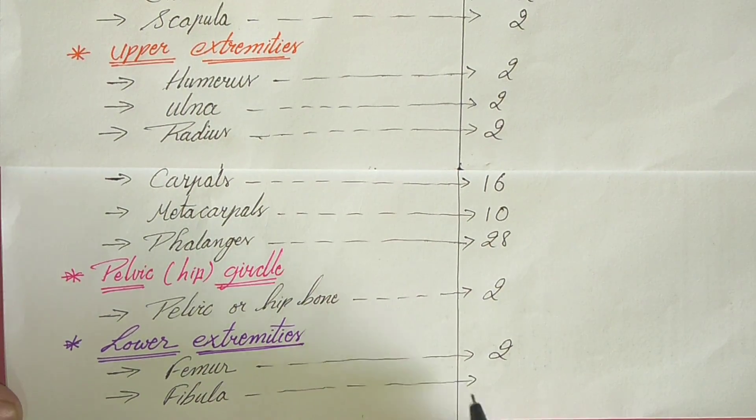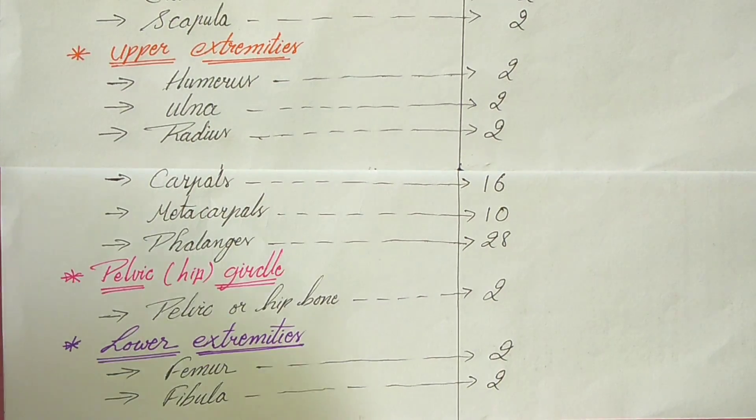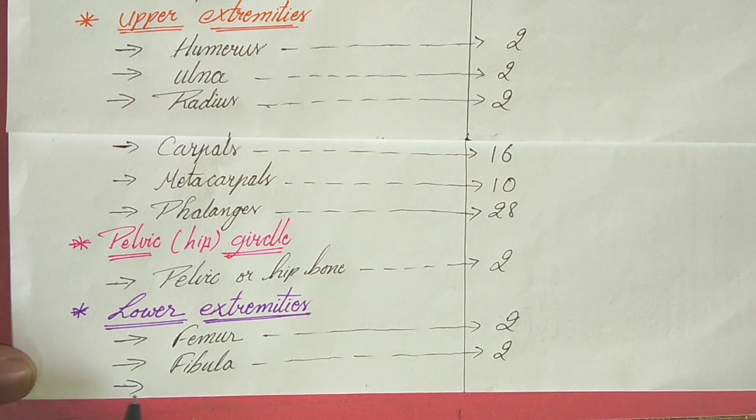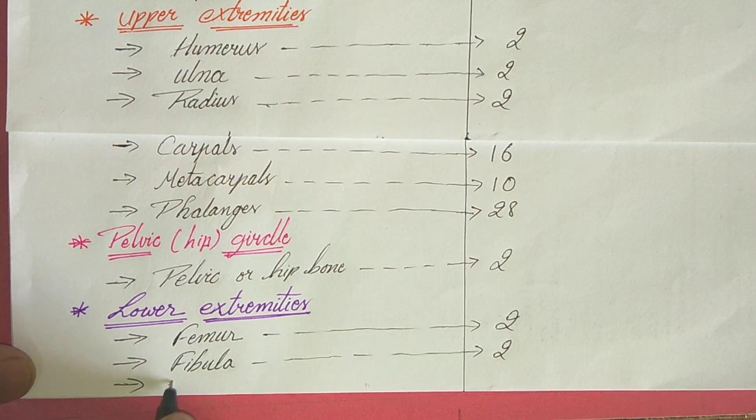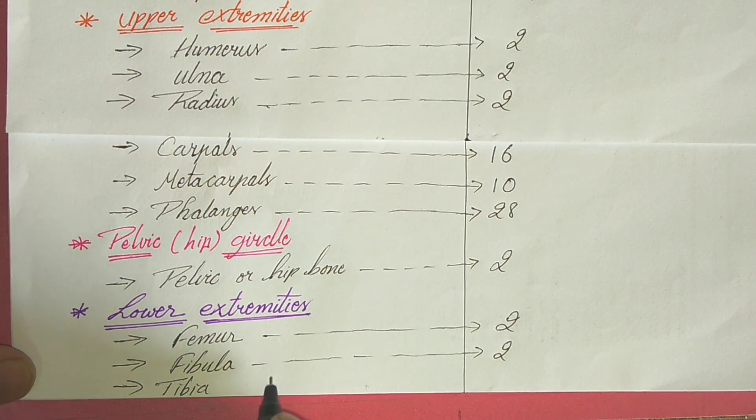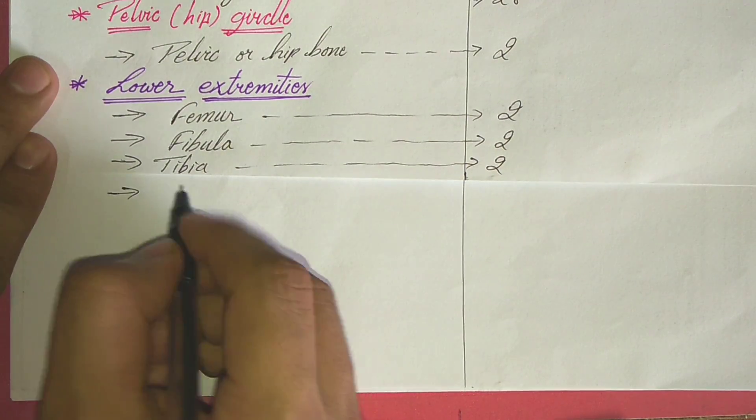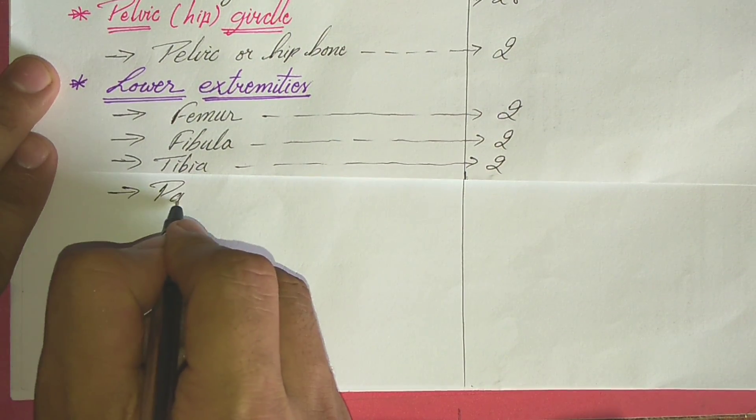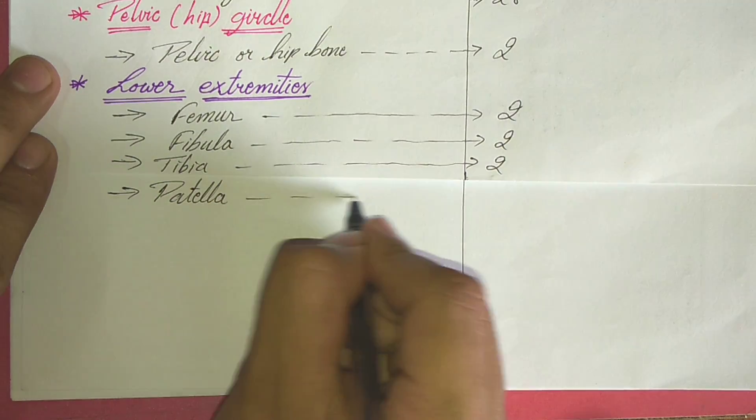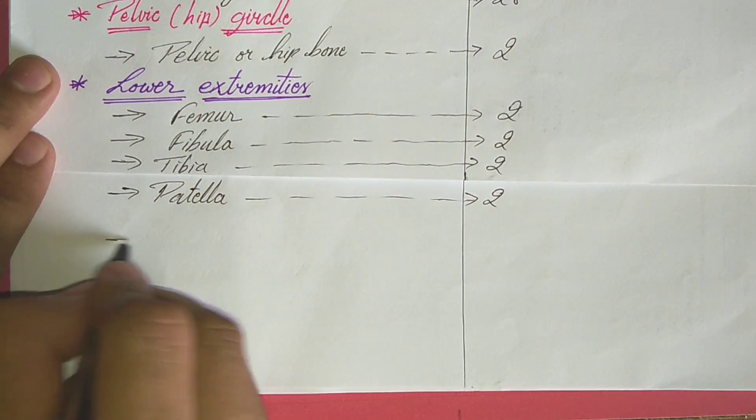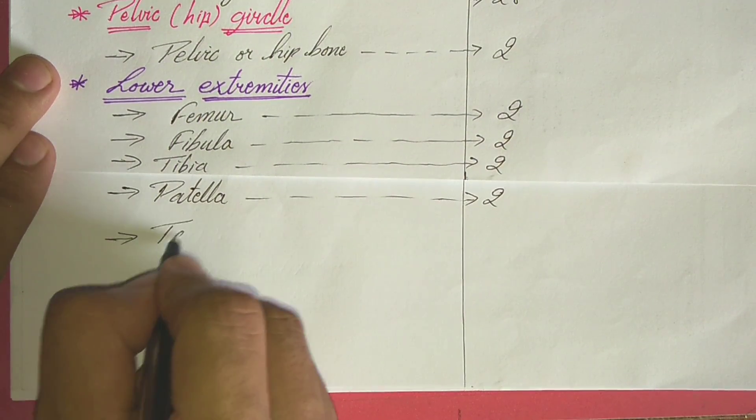Then fibula bone is there. Fibula is also two in number. Then tibia bone is there, which is also two in number. Then patella bone, which is also two patellas.